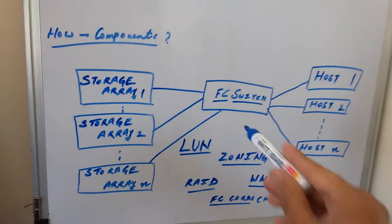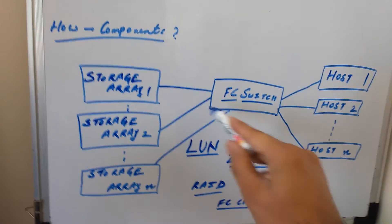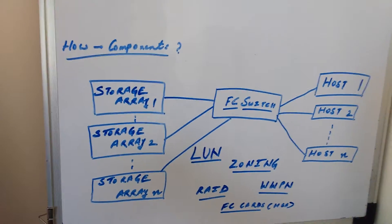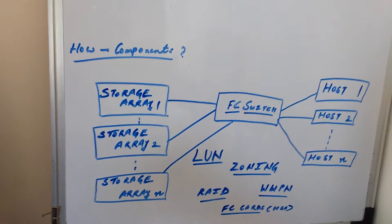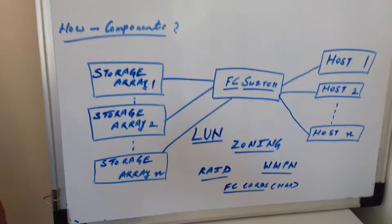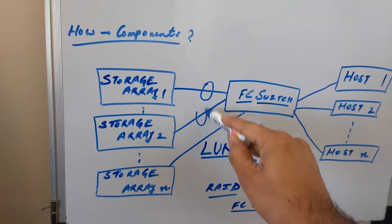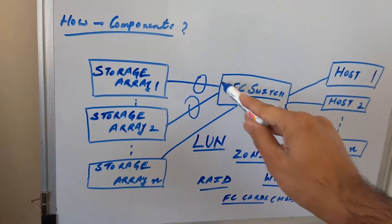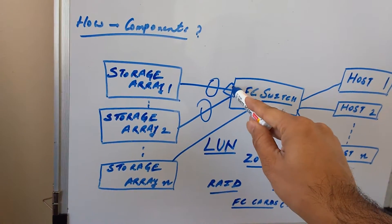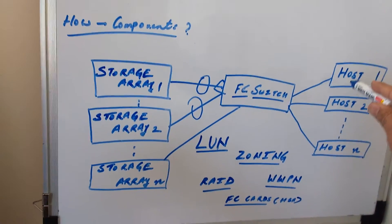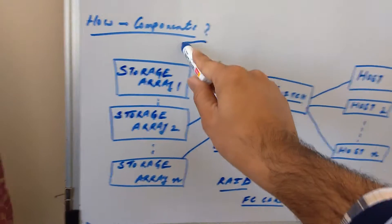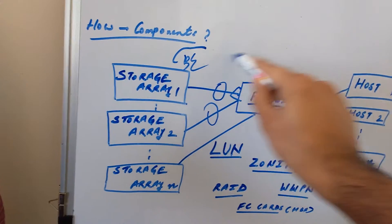Then we have the FC switch, called a fiber channel switch. Everything is connected through a high-end optical fiber network. These are the cables—FC cables—which have ports and are connected to SFPs. At the back end and at the front end, we have different connections.